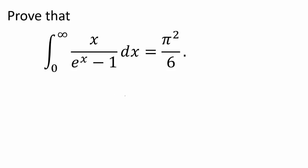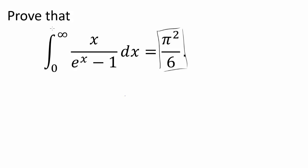This is fascinating. We have this integral that I have no idea how to evaluate: x over e to the x minus 1. How do you even begin to integrate that? And amazingly, they want us to prove that this integral evaluates to pi squared over 6. Where is this pi coming from?